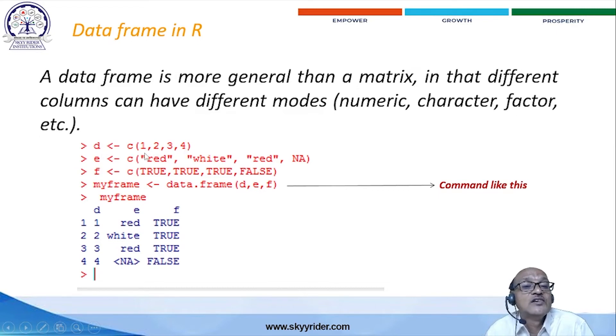And E is one variable. C is equal to some of the colors like red, white, red. Data is not available. C is equal to TRUE, TRUE, TRUE, FALSE. Right now, I want to create a data frame. My frame, that is the variable name. Whatever name you can take. My frame is equal to whatever the data.frame. data.frame, that is the command name.